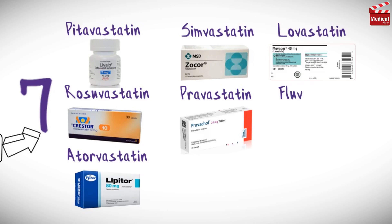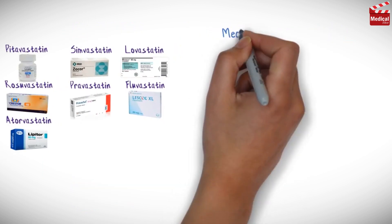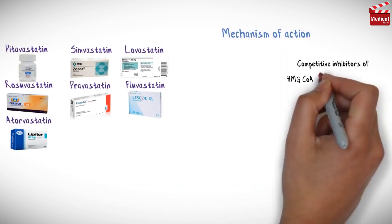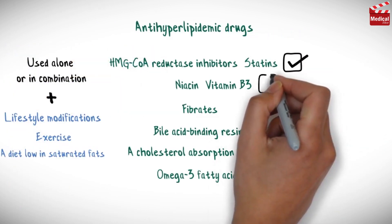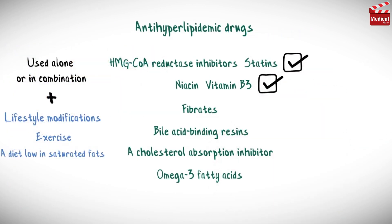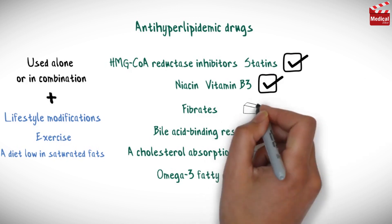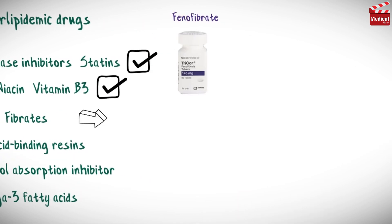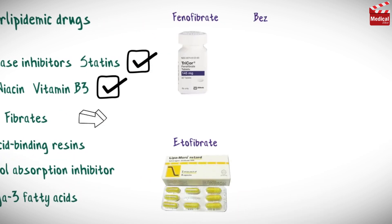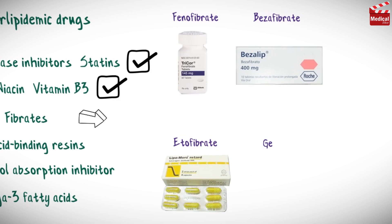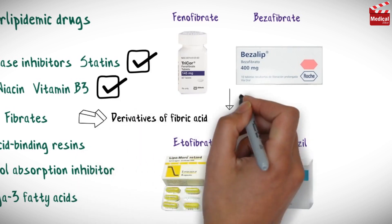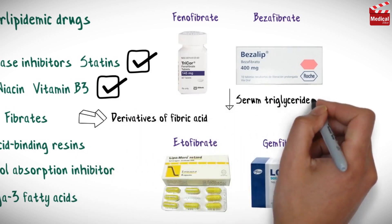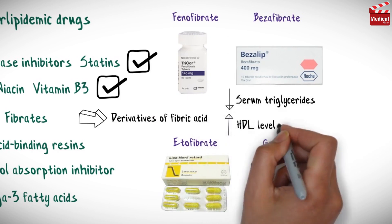In the previous lectures we started discussing the anti-hyperlipidemic drugs. We already discussed HMG-CoA reductase inhibitors and niacin. Today we'll talk about fibrates. Fenofibrate, etofibrate, bezafibrate, and gemfibrozil are derivatives of fibric acid that lower serum triglycerides and increase HDL levels.